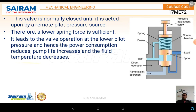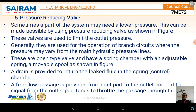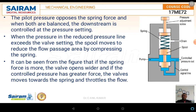The next part is the pressure reducing valve. The pressure reducing valve is another type of valve which has a major application especially when the system needs a low pressure operation. Generally speaking, they are used for branch circuits where the pressure may vary from the main hydraulic pressure lines. These types of pressure valves are used when low pressures are required. The schematic diagram shows the pressure reducing valve.